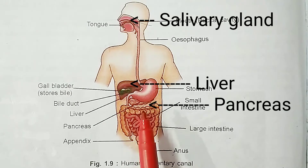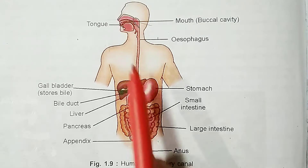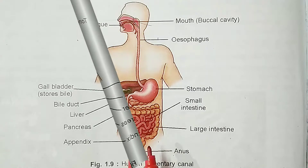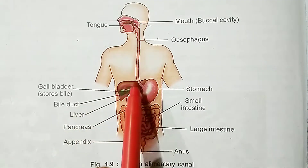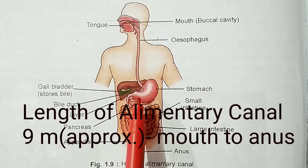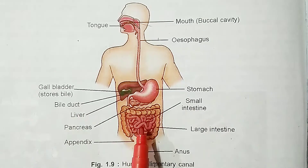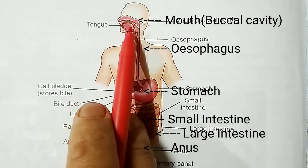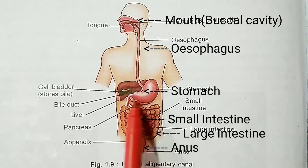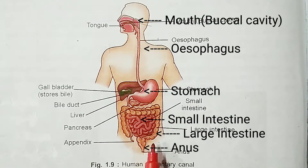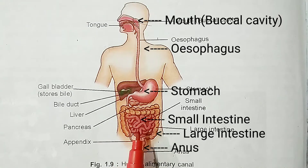In the human digestive system two things we have to consider: the alimentary canal and the associated digestive glands. In human beings the alimentary canal is a long muscular tube and its length is almost 9 meters, passing through the body cavity from mouth to anus. It consists of the mouth and buccal cavity, then the esophagus, then the stomach, small intestine, large intestine, and finally the anus.